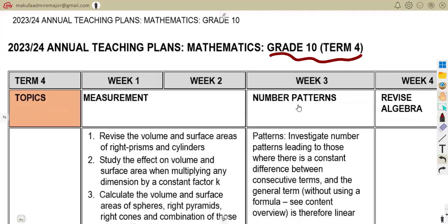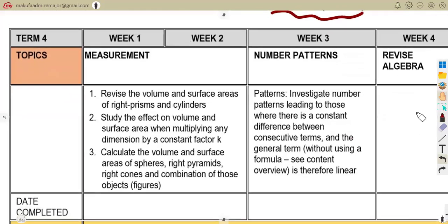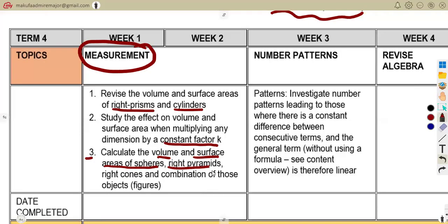They are going to need you to work on these topics, working from your measurement. They need you to know the basics to revise the volume and surface areas of right prisms and cylinders, to study the effect on volume and surface area when multiplying any dimension by a constant factor k, to calculate the volume and surface areas of spheres, right pyramids, the right cones, and combination of those objects or figures when they are combined together.